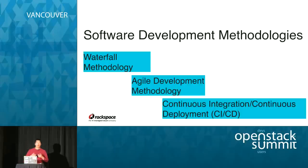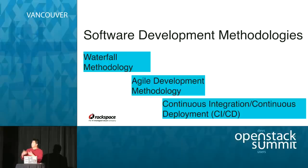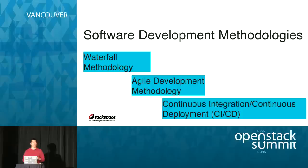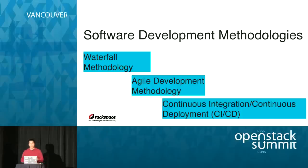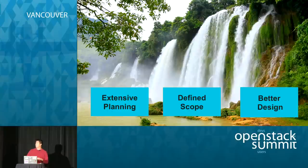If we want to test software, we need to follow how developers are creating it. There are three main ways people create software: the traditional waterfall method, agile methods, and the CICD process. Let's take a look at them one by one.